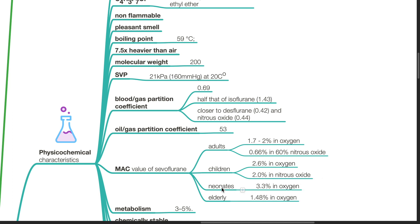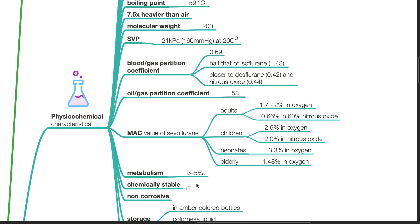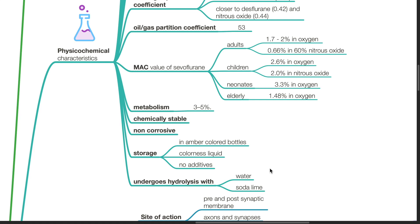In neonates, it can be up to 3.3% in oxygen, and in the elderly it is 1.48% in oxygen. Metabolism is 3 to 5%. It is chemically stable, non-corrosive. It is stored in amber-colored bottles as a colorless liquid with no additives or preservatives. It undergoes hydrolysis with water or soda lime.